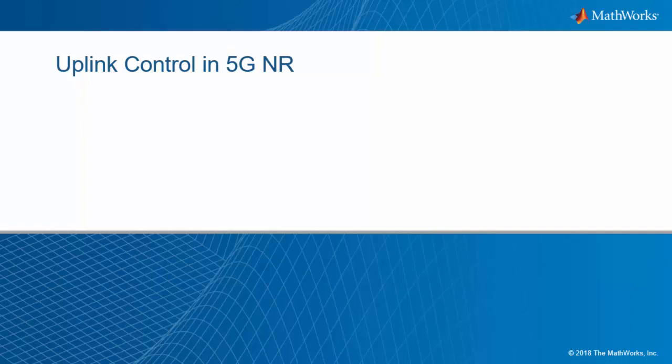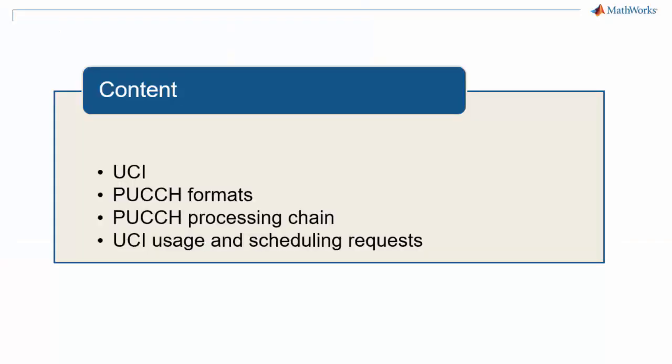This is a new episode of our series 5G Explained. In this video, we discuss uplink control information or UCI in 5G New Radio. We will look at its content, how it is encoded and modulated, then mapped to the 5G New Radio slot via the PUCCH or Physical Uplink Control Channel. We will also look at examples of usage and how it can be used for scheduling requests.